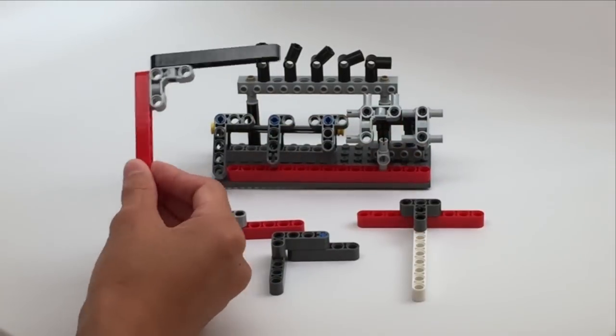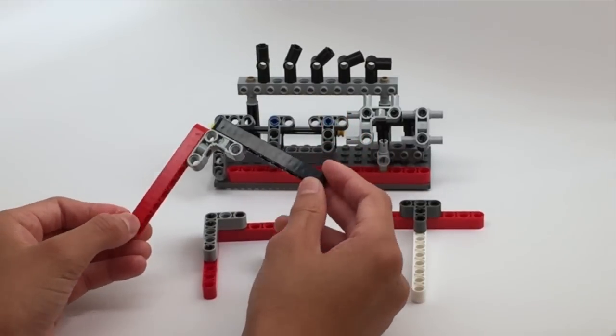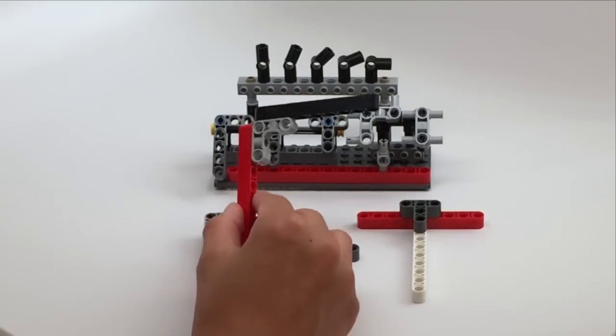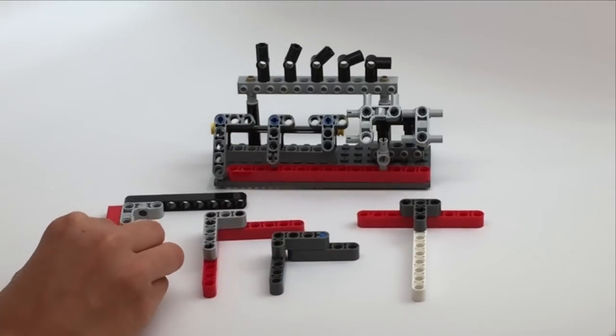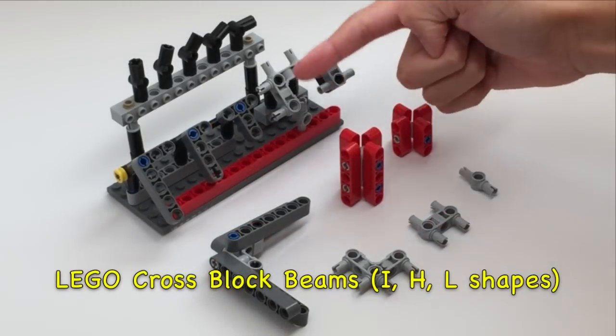We also have this other part which allows us to create sturdy 90-degree angles, and it also has other functions which we'll go into later. Now we move on to these light gray LEGO angle-changing pieces.